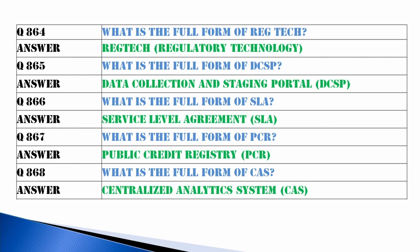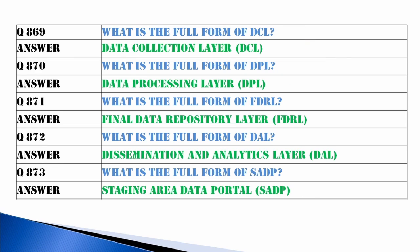What is DCSP? Data Collection and Staging Portal. What is SLA? Service Level Agreement. What is PCR? Public Credit Registry. What is CAS? Centralized Analytics System. What is DCL? Data Collection Layer. What is DPL? Data Processing Layer.